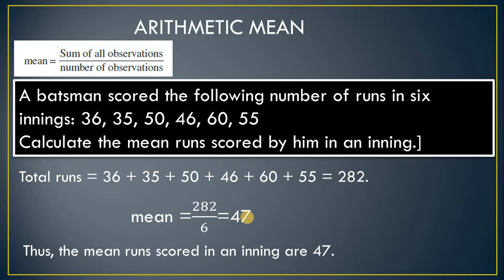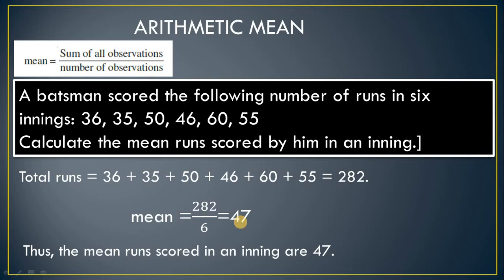You can say on average he scored 47 runs. Whatever answer you get, it should be more than the smallest value and less than the greatest value. Here we get 47, which lies in between — you can cross-check. We got 47, and this is the formula for the calculation.